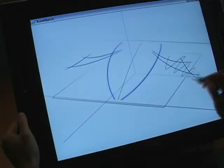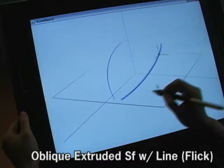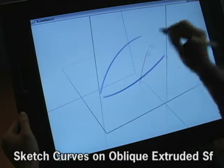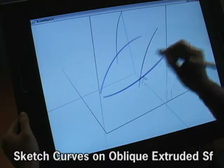If the line gesture starts at the origin of the axis widget, it defines a direction parallel to the picture plane, which is used as the extrusion direction of an oblique extruded surface, which then serves as a sketch surface.